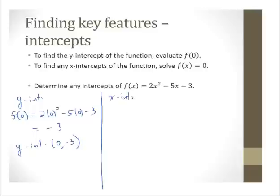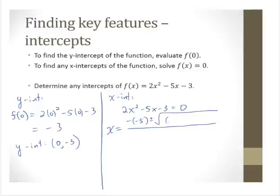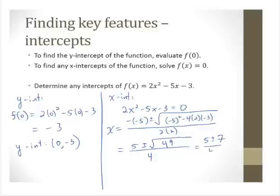Finding x-intercepts, we set the function equal to 0. Using the quadratic formula: x = (5 ± √(25 + 24)) / 4 = (5 ± √49) / 4 = (5 ± 7) / 4. So x = (5 − 7)/4 = negative 1/2, and x = (5 + 7)/4 = 3. The x-intercepts are (−1/2, 0) and (3, 0).